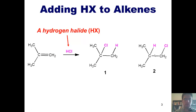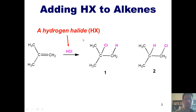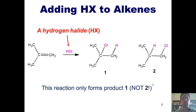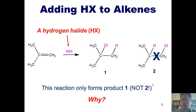You might recall from our previous chapter discussion that in the mechanism for this reaction, the pi electrons from the alkene come out and attack the hydrogen, breaking the hydrogen-chlorine bond. That generates a carbocation intermediate, and then the chloride comes back in and attacks it to form a bond, generating one of these two products. Here's the interesting observation that has been experimentally determined: this reaction only forms product 1 and not product 2 — which should elicit the magical question from you: why?